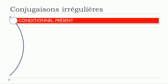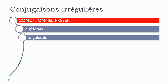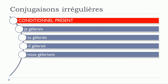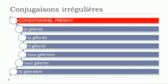If we're talking about conditionnel présent now, we'll see the forms: je gèlerais, tu gèlerais, il gèlerait, nous gèlerions, vous gèleriez, ils gèleraient. It's exactly the same modification and it will concern all the forms — accent grave on top of the first e.